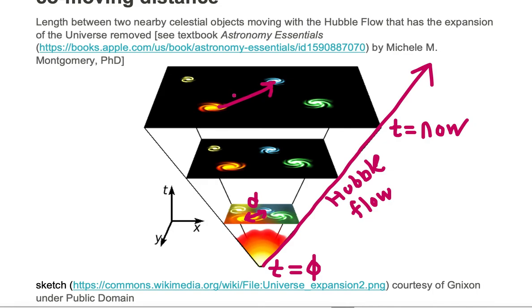Their new distance, we'll call it d prime. If we subtract out the moving of space, or the Hubble flow, then the true distance when these galaxies formed, or d, is what we call the co-moving distance.